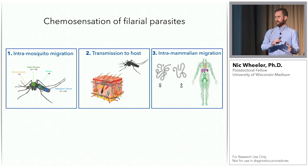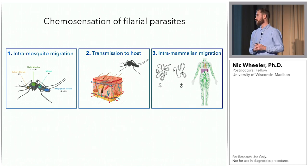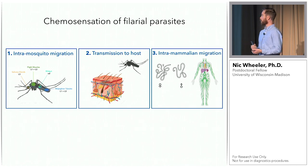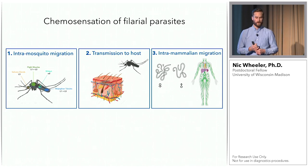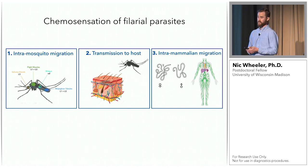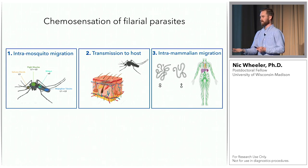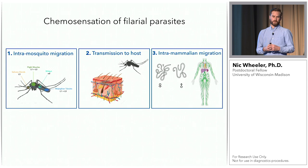Now for the biological questions: I study chemosensation of parasites. There are three particular aspects. First, intra-mosquito migration — this is patterned and happens on very specific days after infection. If the worms aren't able to get to the mosquito head they can't transmit, so chemosensation is probably involved. Second, transmission from the mosquito to the mammal through a bite wound — filarial parasites actually drop into a puddle of saliva and swim through into the bite wound, so sensory modalities are involved. Third, males and females have to find each other in the lymphatics.